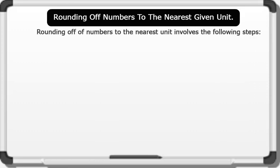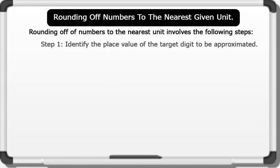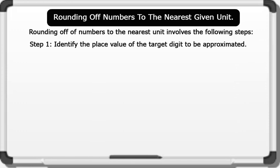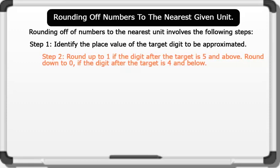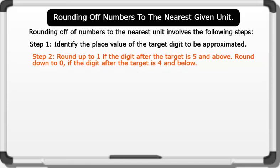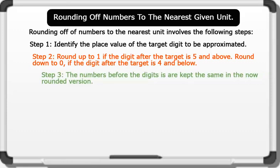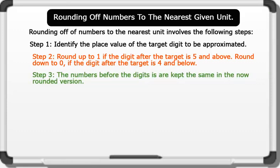Rounding off numbers to the nearest unit involves the following steps. Step 1: Identify the place value of the target digit to be approximated. Step 2: Round up to 1 if the digit after the target is 5 and above. Round down to 0 if the digit after the target is 4 and below. Step 3: The numbers before the digits are kept the same in the now rounded version.